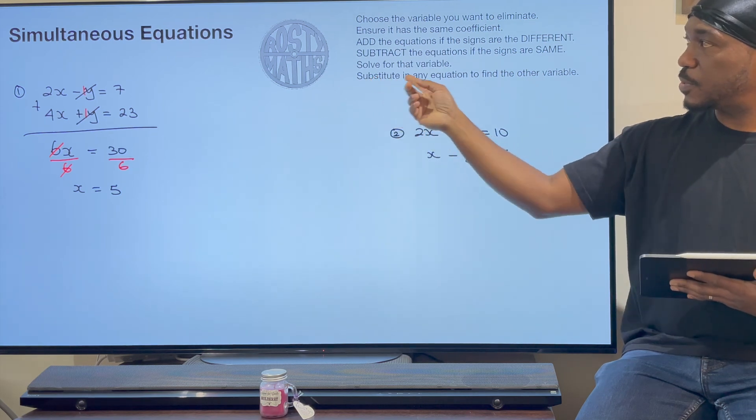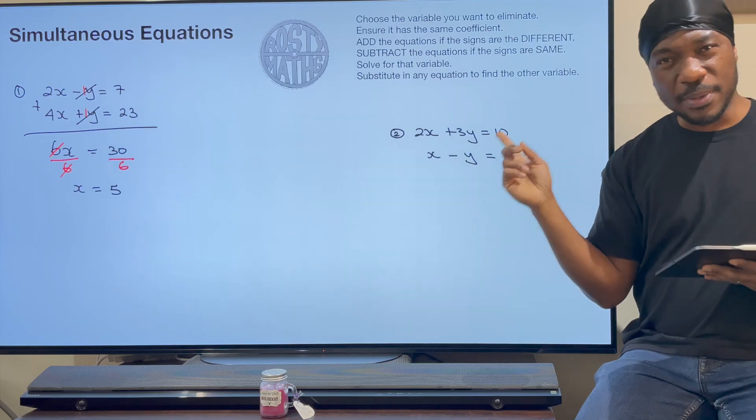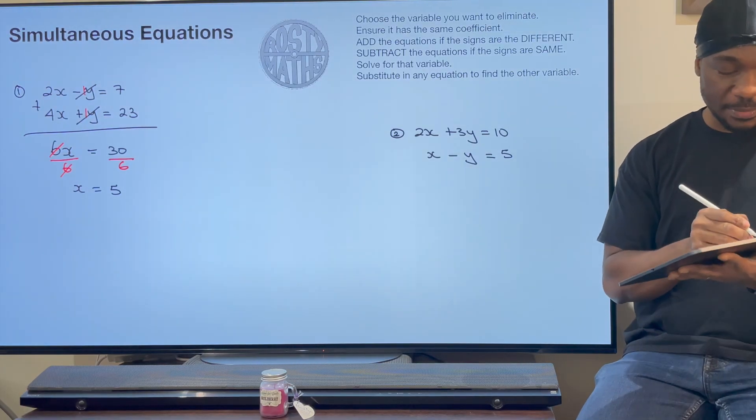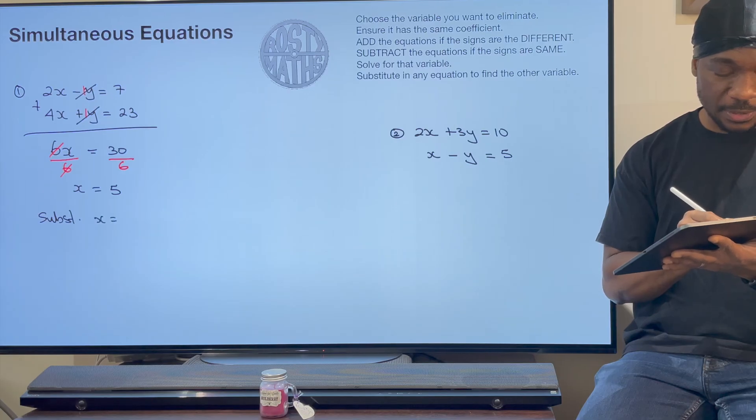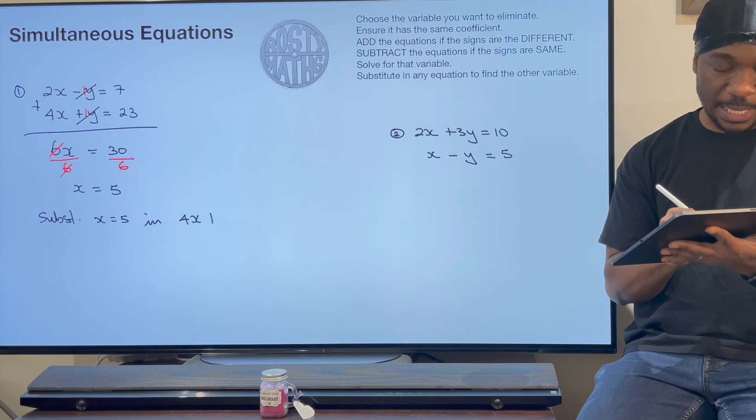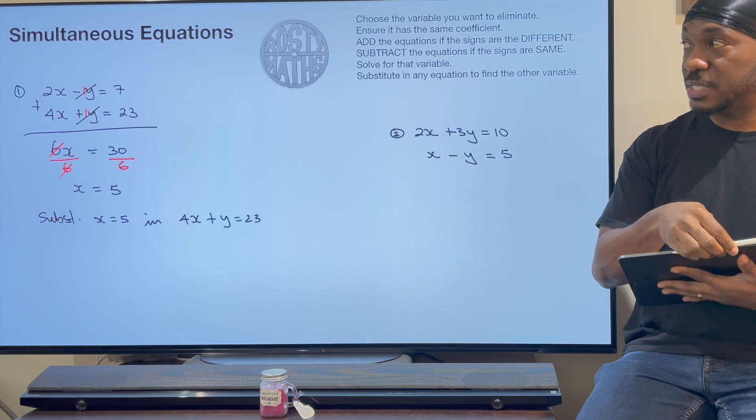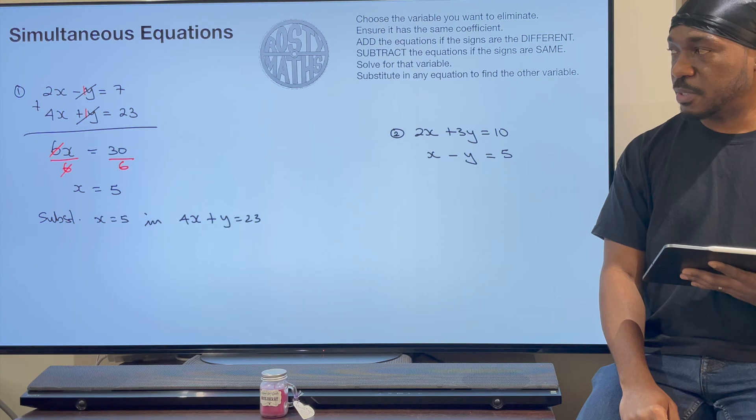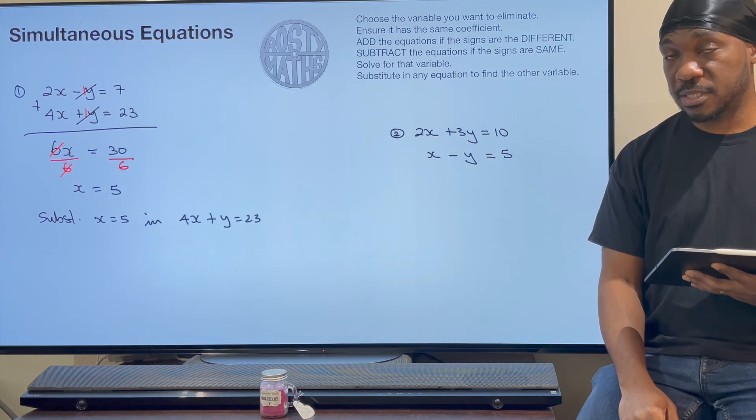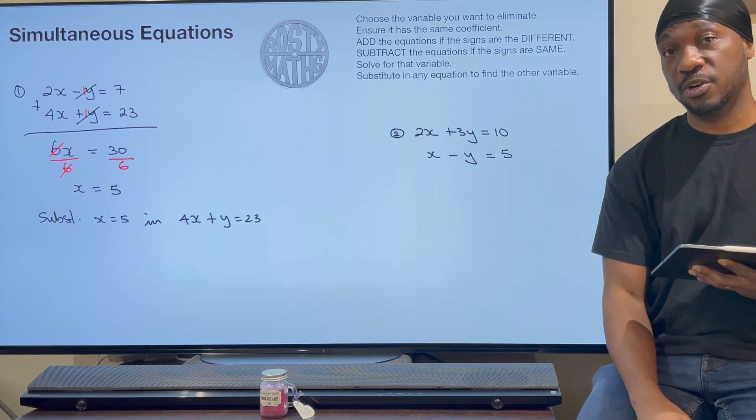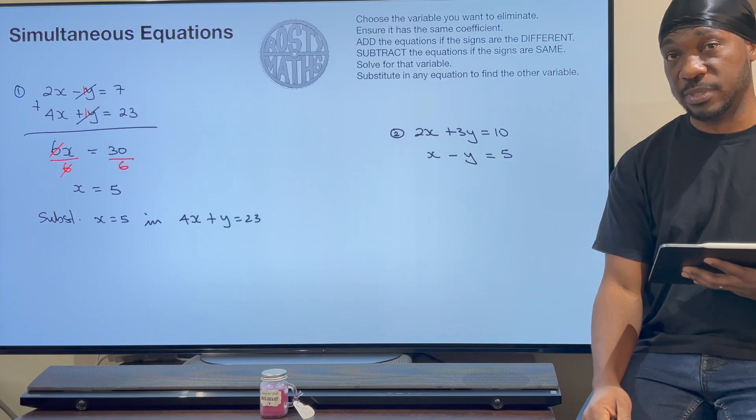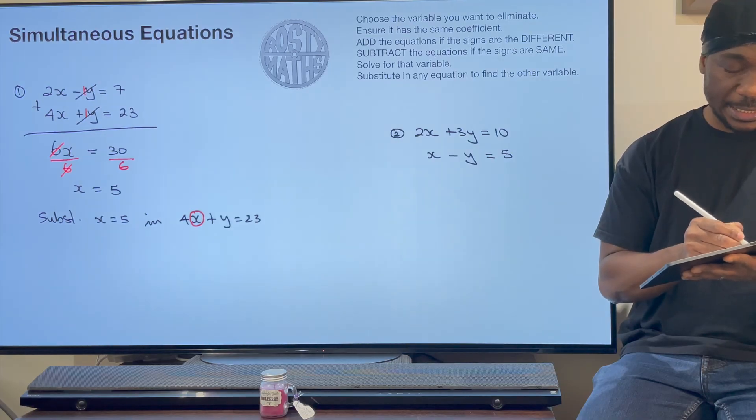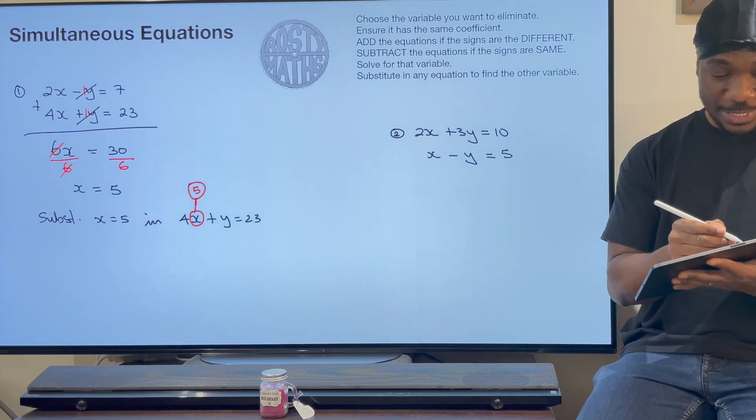The last thing, substitute in any equation to find the other variable. You remember that y that we eliminated? We need it now. So we need to go find it. I am going to substitute x equals 5 in the equation 4x + y equals 23. You can choose any of the two equations. It doesn't matter which one. I've chosen the bottom one. Can you substitute? If the answer to that is no, click on the pop-up banner up here and go and watch my video on substitution. Vitally important because that's what we're about to do now.